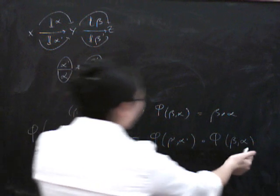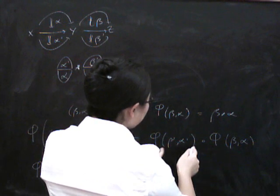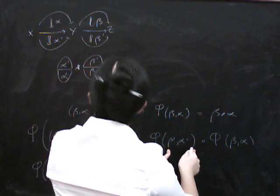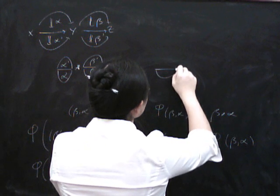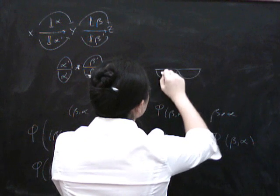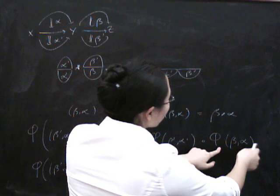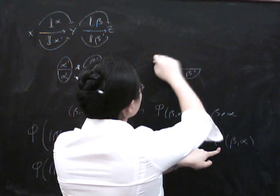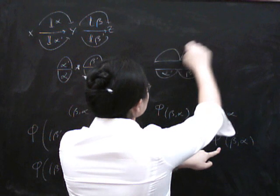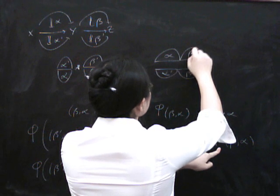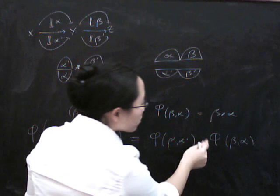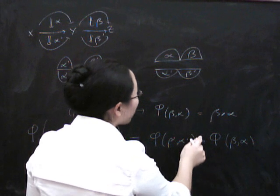Now what about this right-hand side? This right-hand side says do phi on (beta prime, alpha prime), which says take the horizontal composite of beta prime and alpha prime. And then on the other hand, you're going to do the horizontal composite of beta and alpha. And then finally, you're going to do this composition here in the hom category, which means you're going to compose vertically like that.